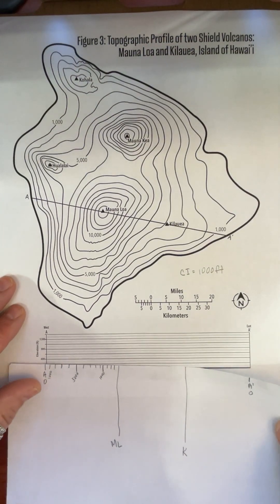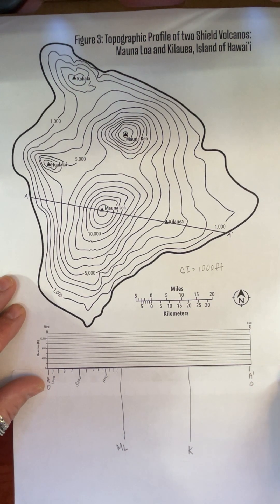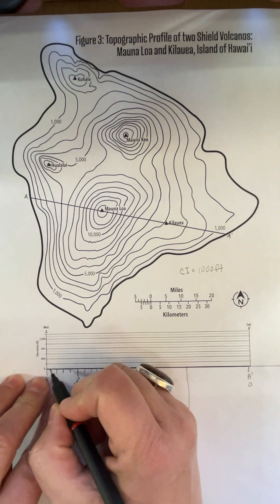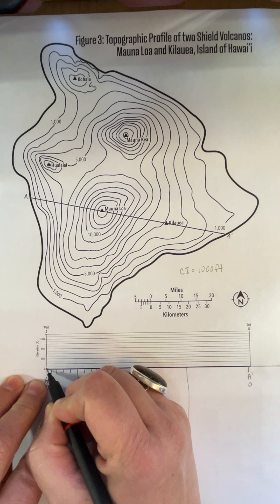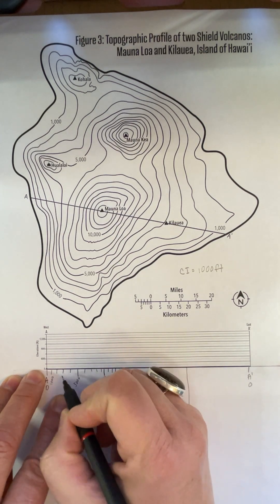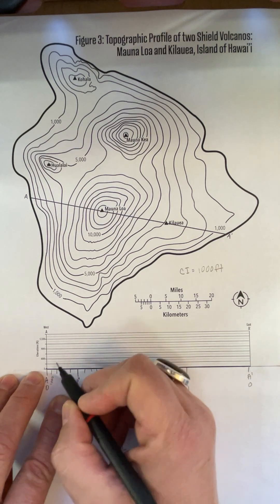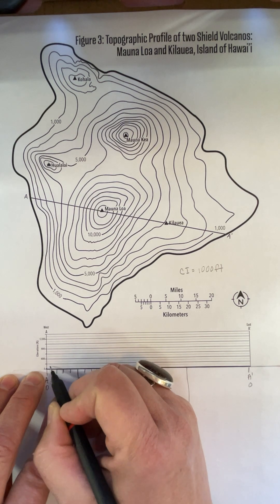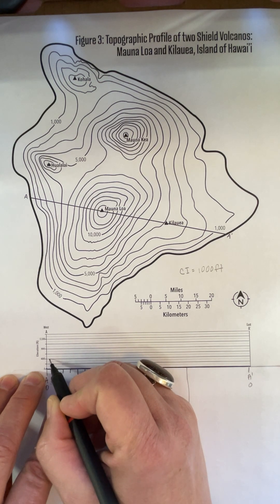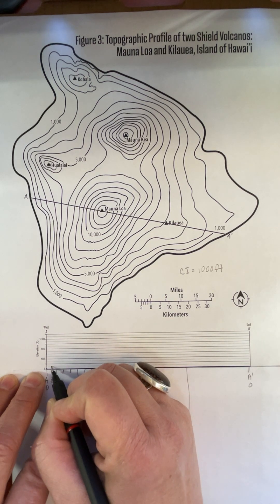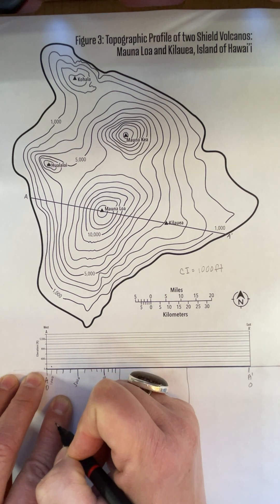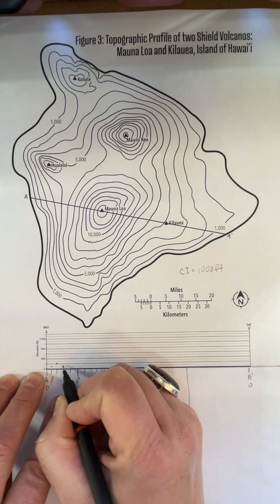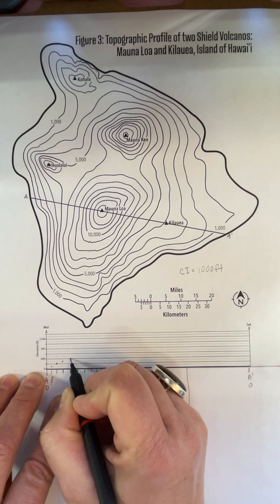The next step is to lay my paper down here on the graph, starting at the end. Where my mark is — this first point will be zero, because that's where A is, at zero. Then my first contour line is one thousand, so each one of these little lines is a thousand: zero, one thousand, two thousand, three thousand, four thousand, and so on. I go and put a dot right above that line on my graph — this is two thousand, I go up to two thousand, three thousand, four thousand.